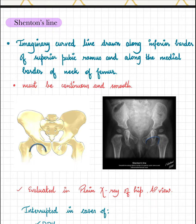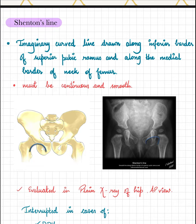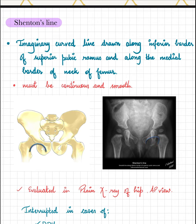In this diagram we can see that it is continuous from the inferior border of the superior pubic ramus along the medial border of the neck of femur. It is usually evaluated in a plain X-ray of the hip, AP view — anterior posterior view — where we can similarly see the line running continuously from the inferior border of the superior pubic ramus along the medial border of the neck of femur.